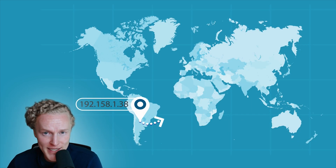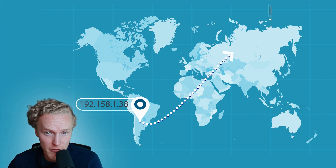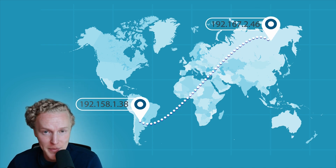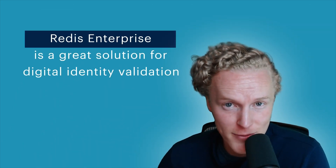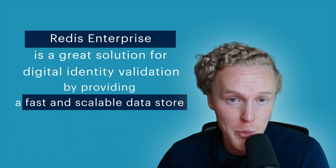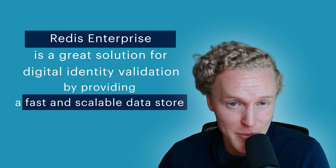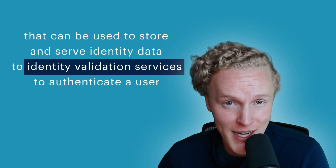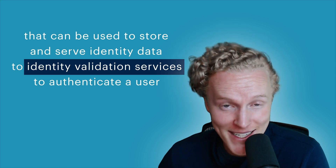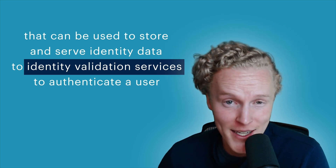If for some reason one of these digital identity data points drifted far from their original footprint — say a different IP address in a different country — the site could request an SMS code or security question. Ultimately, Redis Enterprise is a great solution for digital identity validation by providing a fast and scalable data store that can be used to store and serve identity data to identity validation services to authenticate a user.